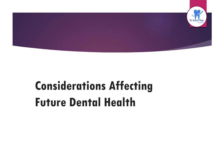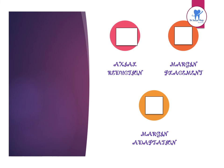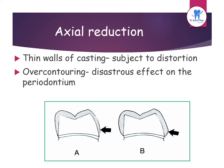Improper tooth preparation may have various adverse effects on long-term dental health. Considerations include axial reduction, margin placement, and margin adaptation. Axial reduction plays an important role in securing space for adequate thickness of restorative material. Inadequate axial reduction causes thin walls and a weak restoration — thin casting walls are subject to distortion — and a bulbous over-contoured restoration has a disastrous effect on the periodontium.